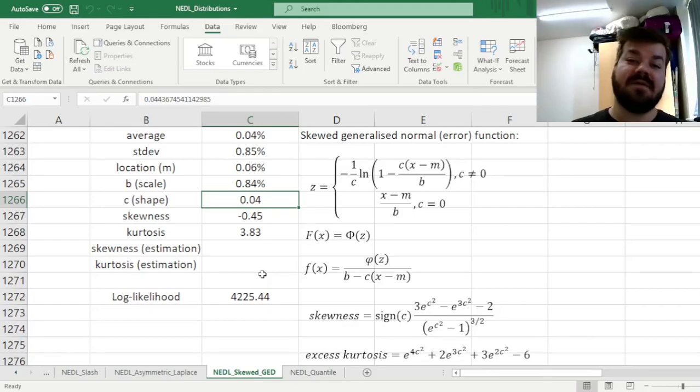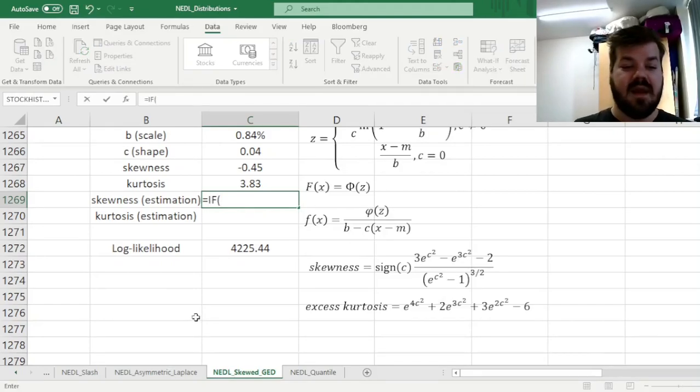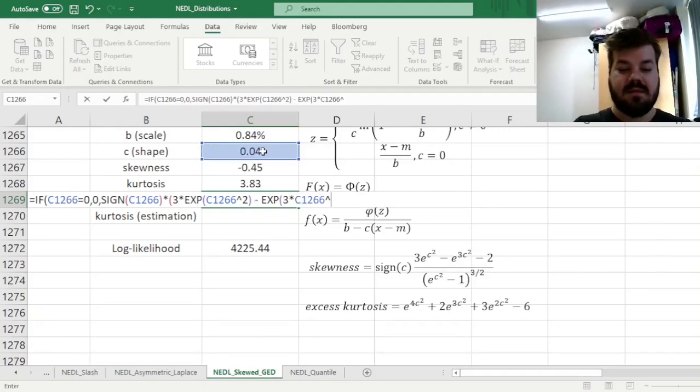And we can see that we have arrived at a shape-parameter value of 0.04, resulting in a moderately left-skewed distribution. The theoretical skewness and kurtosis can now be calculated using these formulas. So for the theoretical skewness, we can simply use this formula, so we need to input if our shape parameter is equal to 0, then we need to return 0, and if it is not 0, we have to calculate it using this formula. So sine of our C-parameter times the fraction. In the numerator, we have got three times the exponent of C-squared, minus the exponent of 3, C-squared, minus 2, and in the denominator, we'll have the exponent of C-squared, minus 1, and raise the whole denominator to the power of 3 halves.